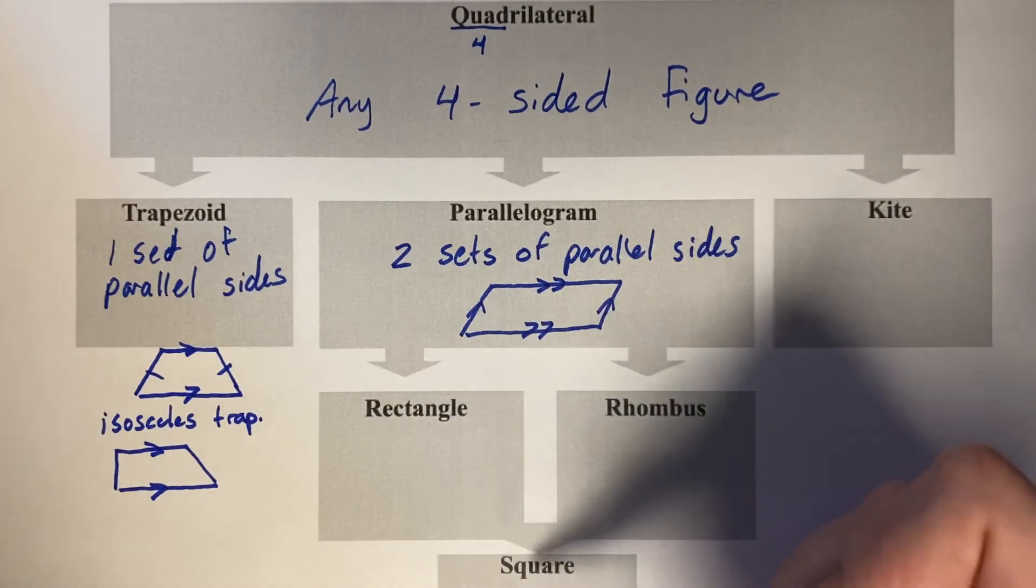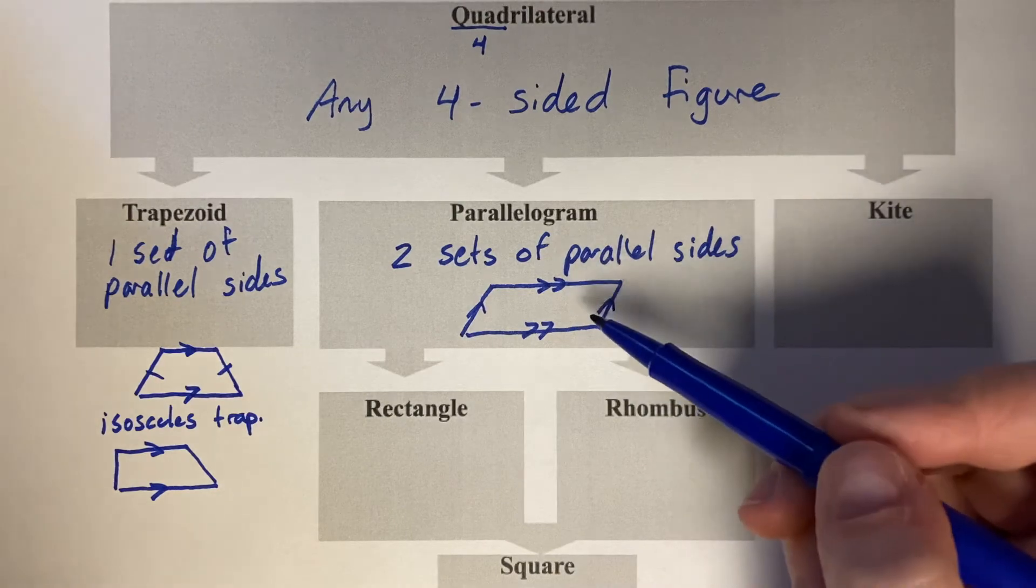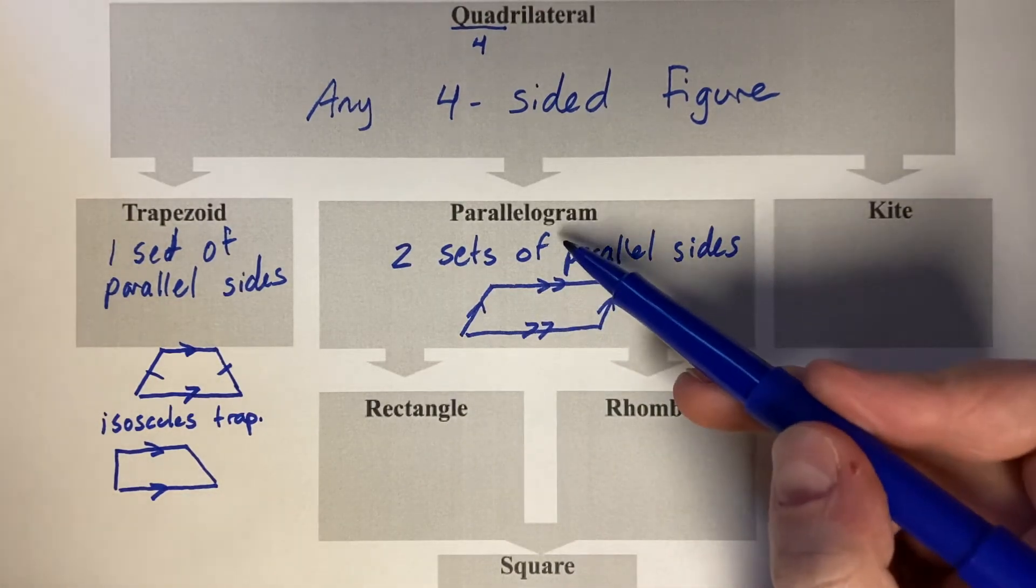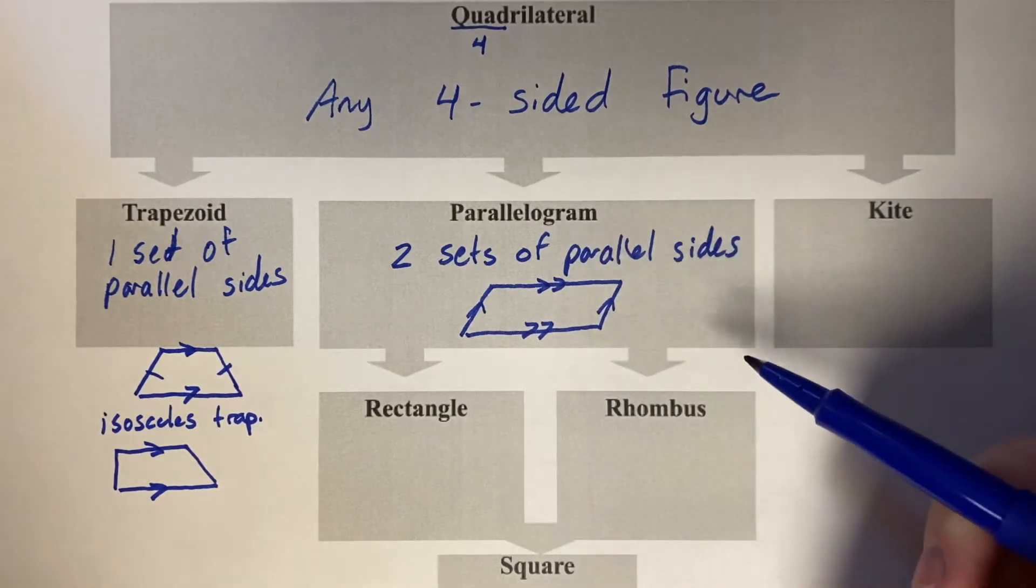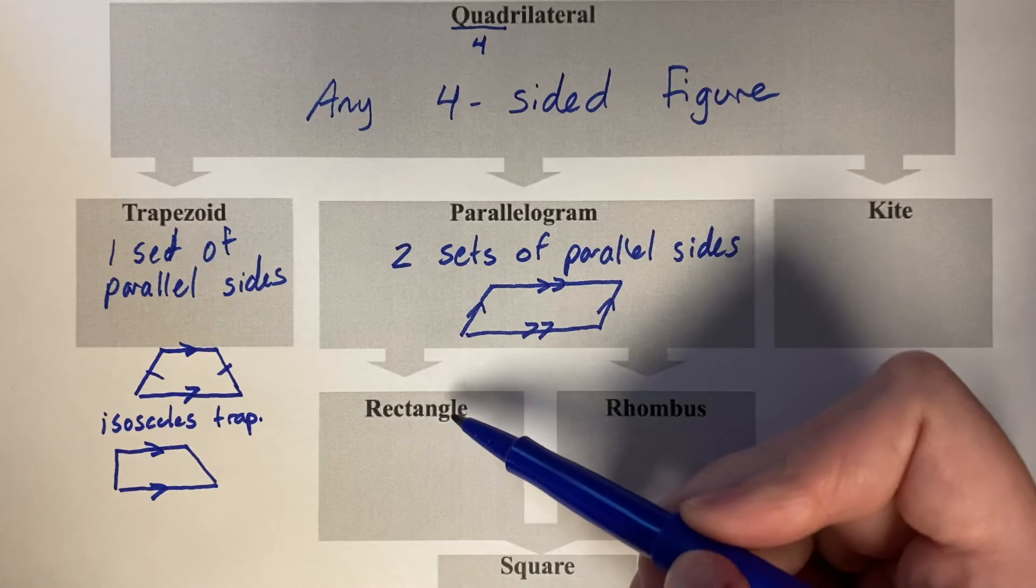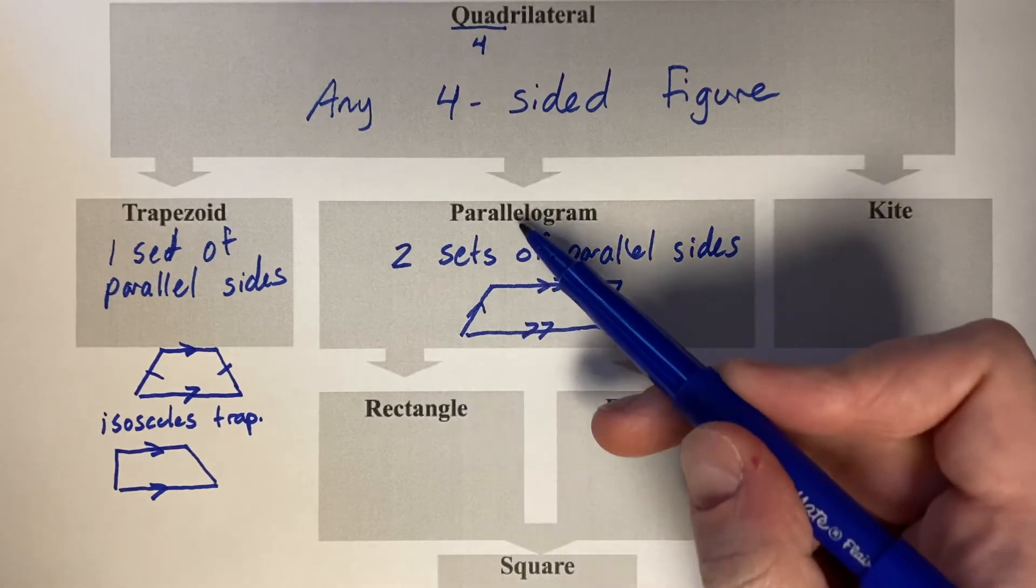And yes, these figures underneath parallelogram are parallelograms. So a rectangle is a parallelogram, a rhombus is a parallelogram, a square is a parallelogram. Each of these below get the characteristics of above. So a rectangle is a parallelogram and a quadrilateral.